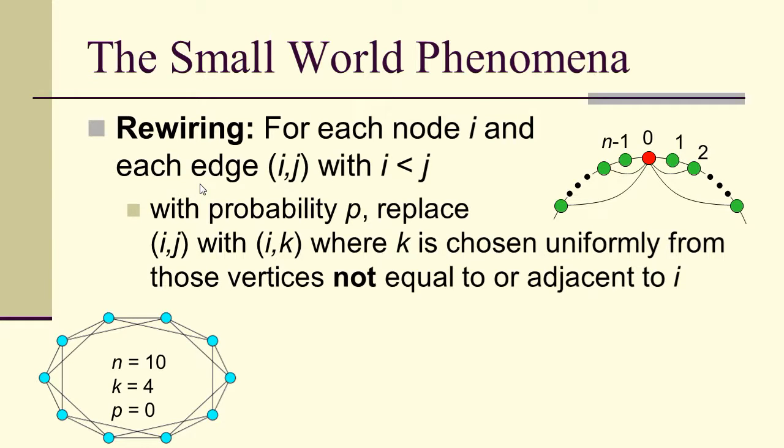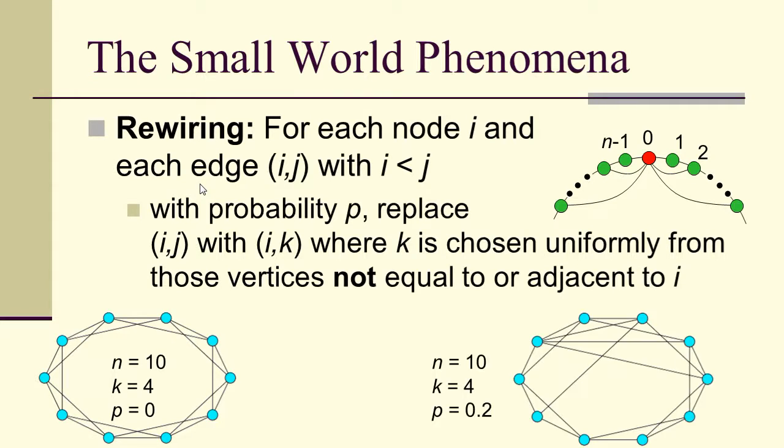So here's n equals 10, k equals 4, p equals 0. Here, I've rewired with a probability p of 0.2, and you can see that we've lost some of the connectivity on the ring lattice structure, and we've added these diagonals, these connections across the ring structure. But just very few, not a whole lot.